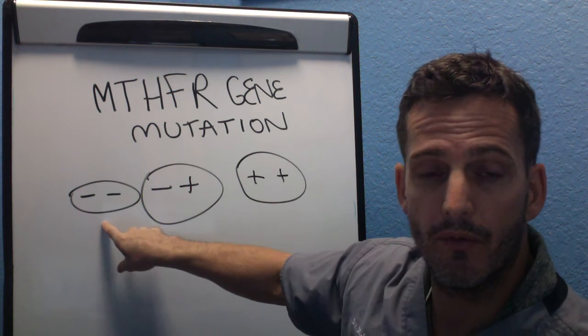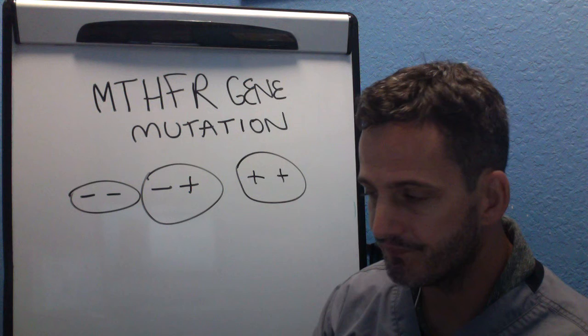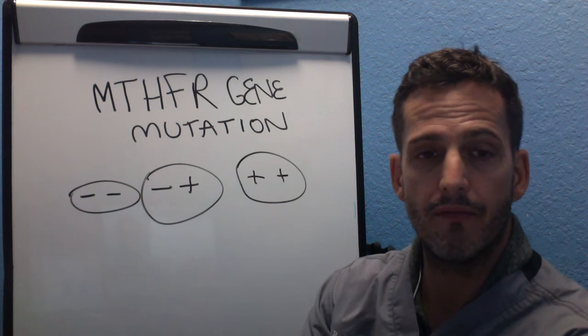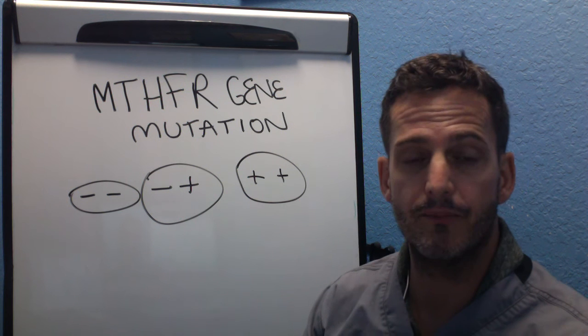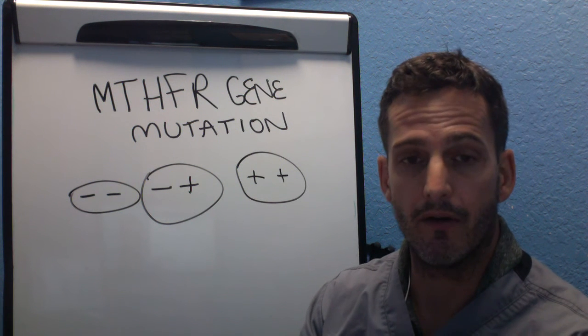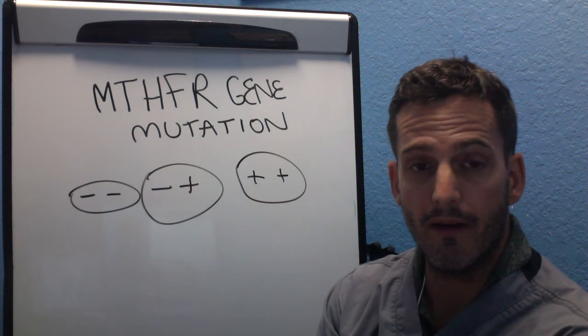And so when you have a normal normal, that means for every 10 swipes that you do of that credit card, 10 swipes are good. When you have a positive negative, or you have a heterozygous mutation, that means that seven swipes of the card are good, and three are not. So the card goes in sideways, or it doesn't go in all the way, and it can't read it.